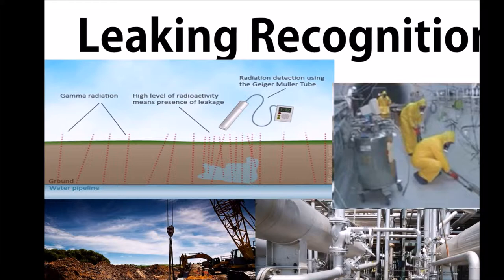One way to locate these leakages is to add an amount of sodium-24 to the substance within the pipe. No radiation from the sodium-24 is emitted whilst in the pipe.